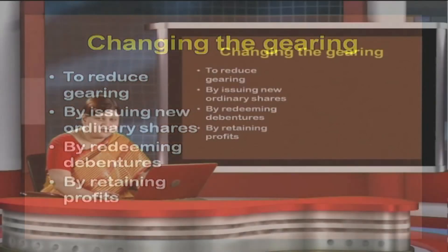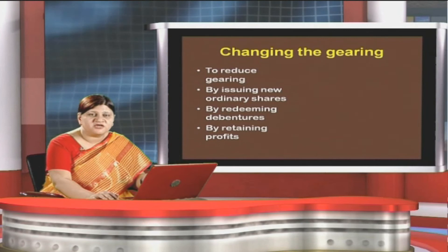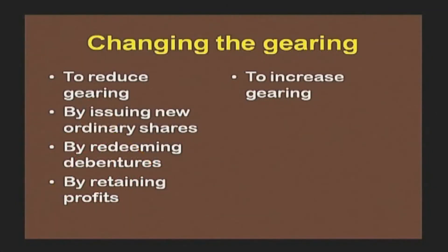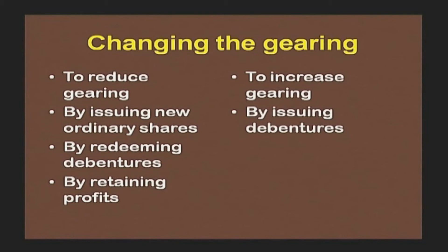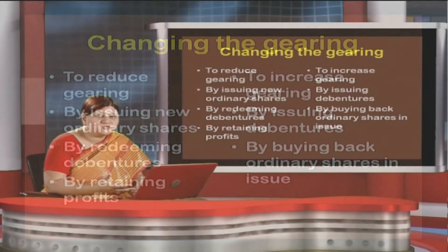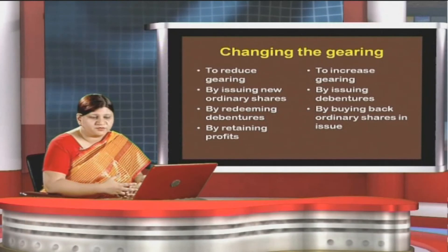Profits can be retained so fixed charges on profits are lower. To increase gearing, we need to issue debentures. When we issue debentures, we are financing the capital structure by debt, and in that way we can buy back ordinary shares in issue. The lesser the number of ordinary shares, the lesser the dividend to be paid.